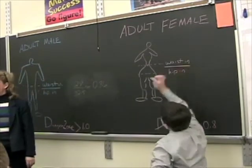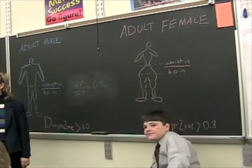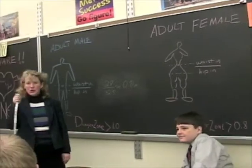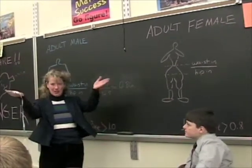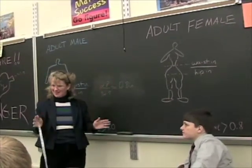So in other words, algebraically, the female body shape is structured so the waist is smaller than the hips. Now let's see what it will look like on me.